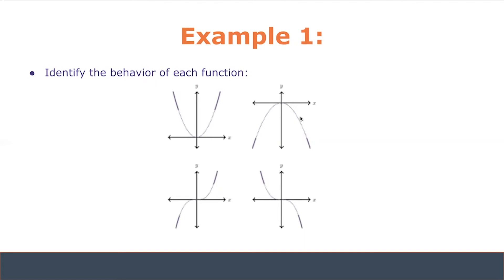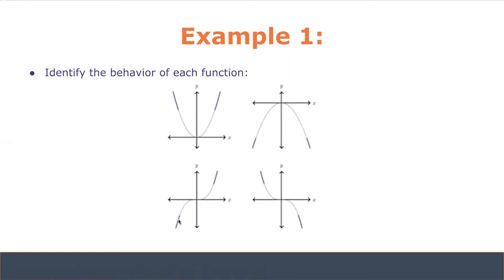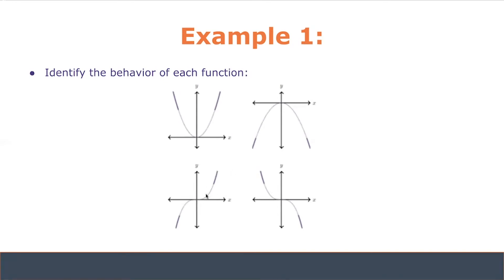The bottom two graphs look trickier. Instead of having two different directions, they have two different concavities. Looking at the lower left graph, it is increasing from x equals negative infinity to x equals infinity because the y values increase the entire way. Because the graph has an inflection point at x equals zero, we see a concavity change. From negative infinity towards zero, the arc opens downwards, making it concave down. From zero towards positive infinity, the arc opens upwards, making it concave up.